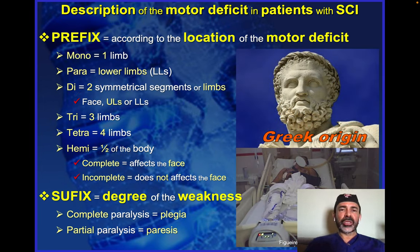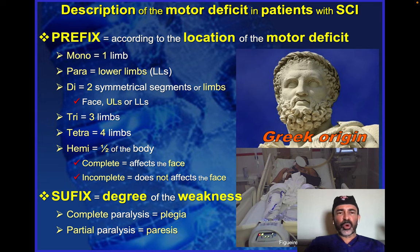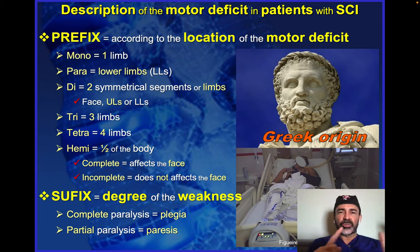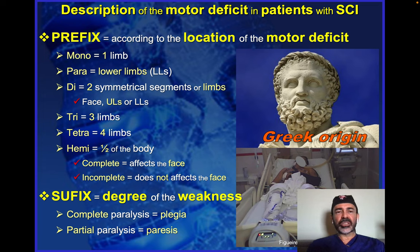Combining those terms, you combine the prefix plus the suffix — the prefix meaning the location of the motor deficit. So: one limb is 'mono'; the lower limbs are 'para'; two limbs, 'di'; or even two sides of the face; three limbs, 'tri'; four limbs, 'tetra'; and half of the body right to left side, 'hemi' — complete if it affects the face, incomplete if it does not affect the face.